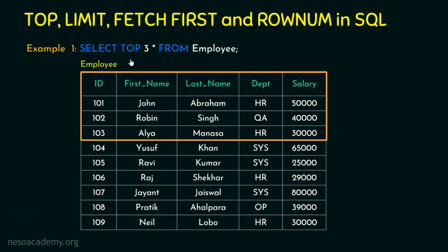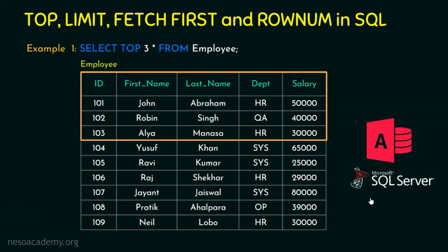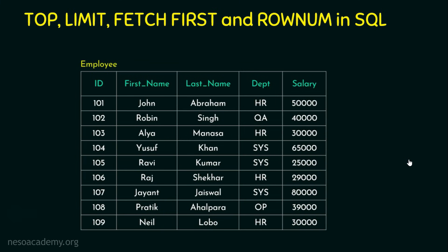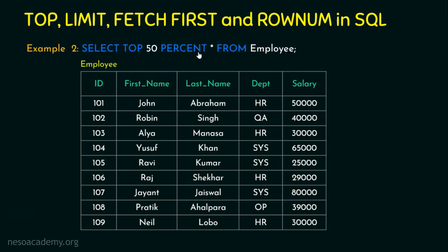The keyword we are using here is TOP, which is available in Microsoft SQL Server and Microsoft Access database management systems. Now let's see Example 2, using the same table but with a modified query. Example 2 is: SELECT TOP 50% * FROM employee. What I'm expecting from this query is 50% of the records.